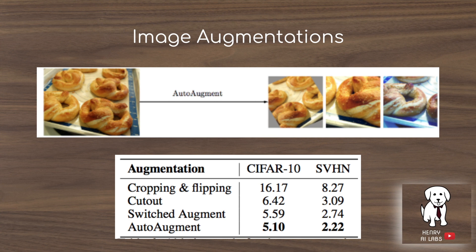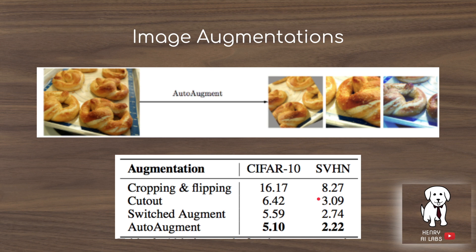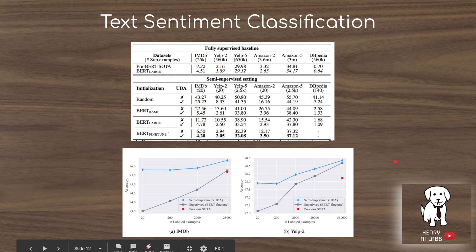For image augmentation, they use the auto-augment algorithm to construct augmentations and compare the predicted class distributions. They also test cropping and flipping, which actually performs surprisingly poorly. Cut out crops a random patch from the image. For text, the results on sentiment classification using the back translation technique are compelling — they achieve strong results using only 20 samples from the IMDB movie review sentiment classification dataset.